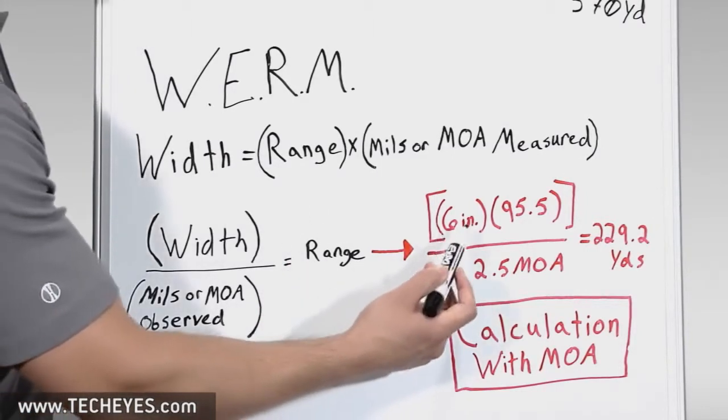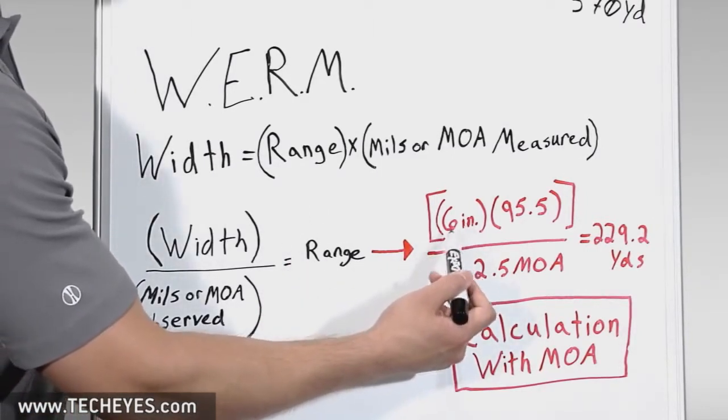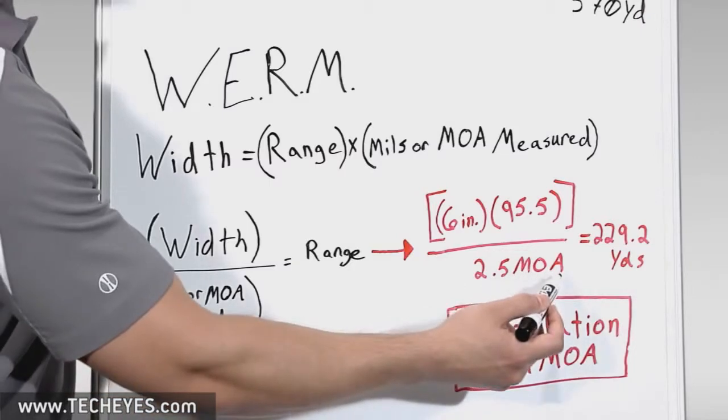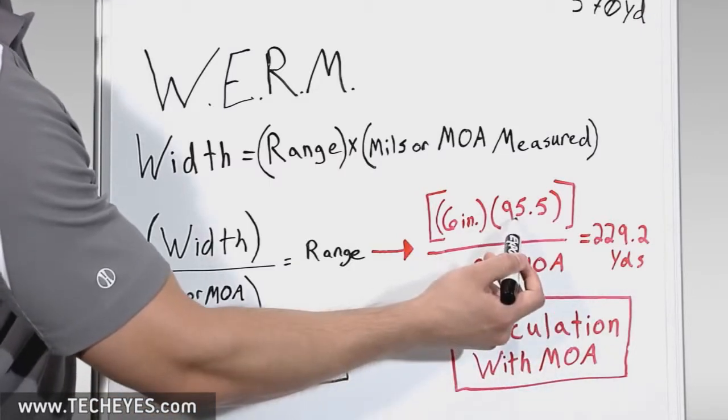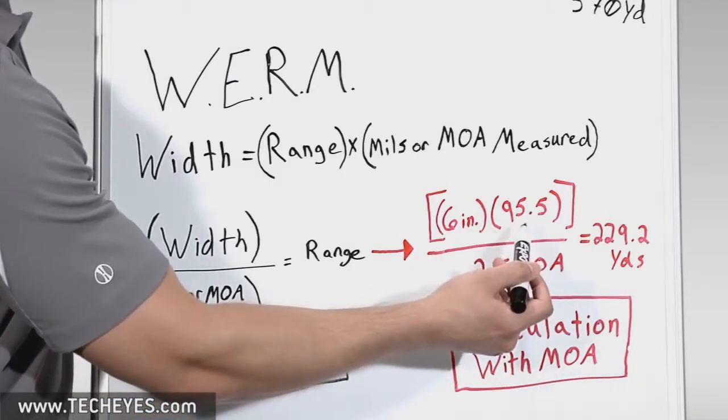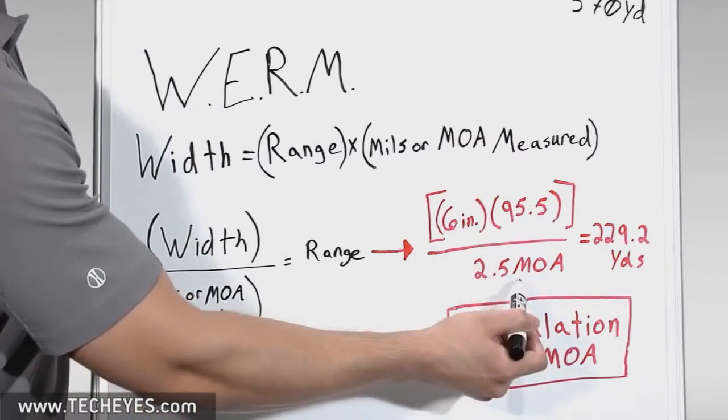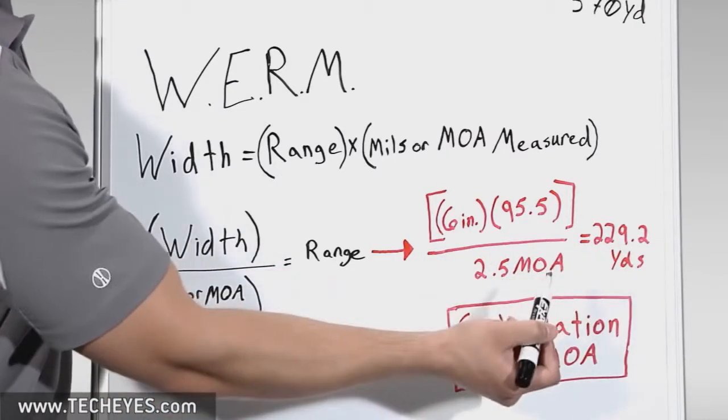Using what we learned, we know our target is 6 inches wide, and we know that it filled out 2.5 MOA. Here we fill in 95.5. This number keeps our inches constant in relation to our minute of angle to give us an accurate yardage reading.